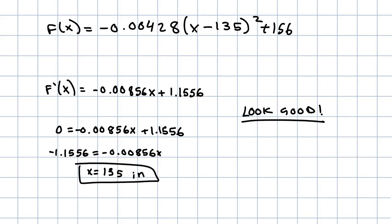Now let's take the first derivative of this release estimate. If we use the chain rule or expand it out and use power rules, we get f'(x) equals negative 0.00856x plus 1.1556.